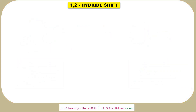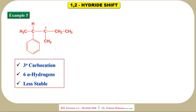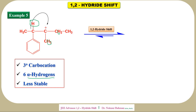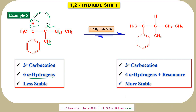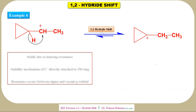Example five: here it is a tertiary carbocation with six alpha hydrogens (three plus two plus one). It is less stable. Transferring the hydride to the next carbon generates another tertiary carbocation with four alpha hydrogens. Interestingly, this new carbocation also has resonance, which dramatically increases stability. The resonance effect was not present in the previous carbocation, so this is undoubtedly more stable.